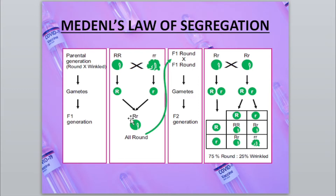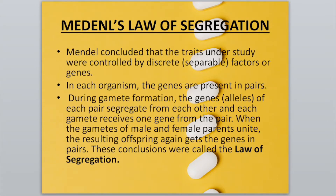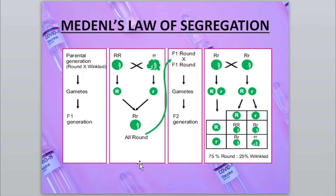The statement of Mendel's Law of Segregation: during gamete formation, genes of each pair segregate from each other; each gamete receives one gene from the pair. When the gametes of male and female reunite, the resulting offspring again collects genes in pairs. These conclusions are known as Mendel's Law of Segregation.